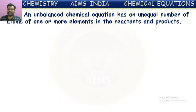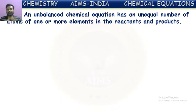An unbalanced chemical equation has an unequal number of atoms of one or more elements in the reactants and products. If the number of atoms of all elements on both sides are the same, it is a balanced equation. But if one or more atoms are unequal on both sides, then that equation is said to be an unbalanced equation.